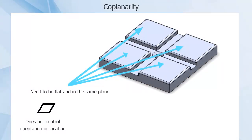This could then be controlled by adding parallelism to each surface, but that would not control location, so a position tolerance for each of the four surfaces would also need to be called out.